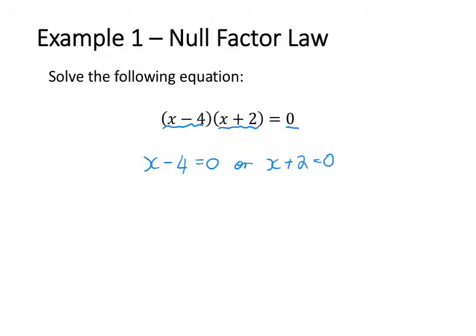Now that I've applied the null factor law, I know that x minus 4 is equal to zero, so x is going to equal 4. Or x plus 2 is equal to zero, so x is going to equal negative 2. So for the equation (x minus 4)(x plus 2) equals zero, x equals 4 or x equals negative 2.